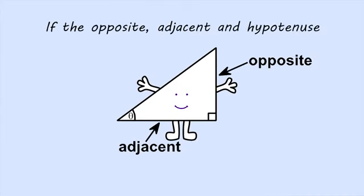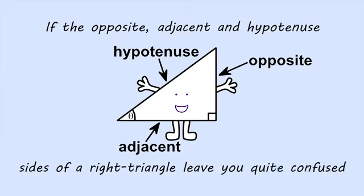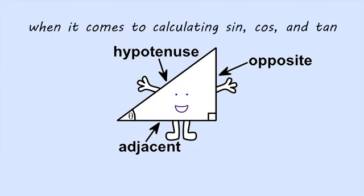If the opposite, adjacent, and hypotenuse sides of a right triangle leave you quite confused when it comes to calculating sine, cosine, and tangent, don't worry, there's a useful formula at hand.